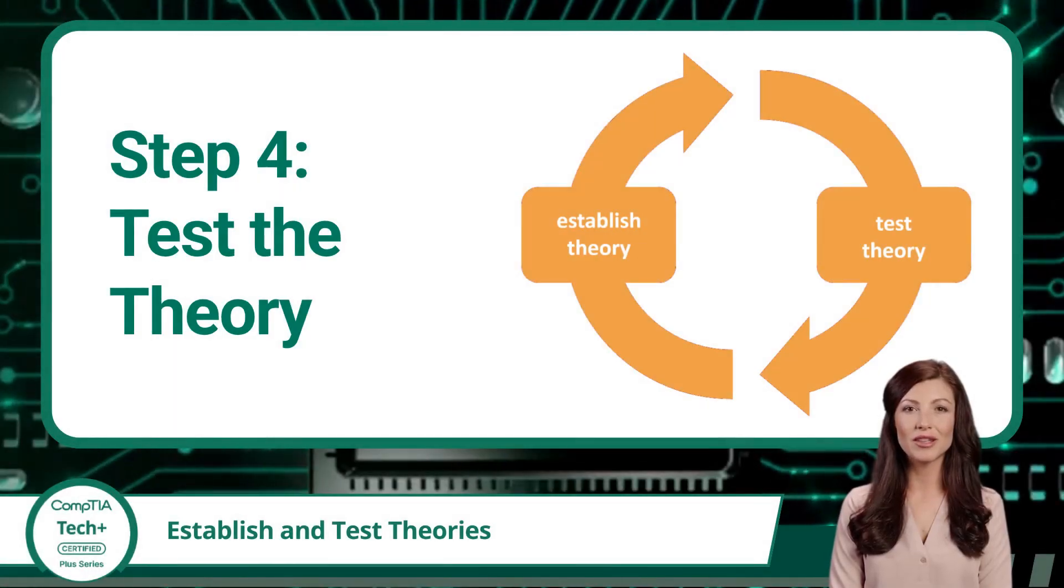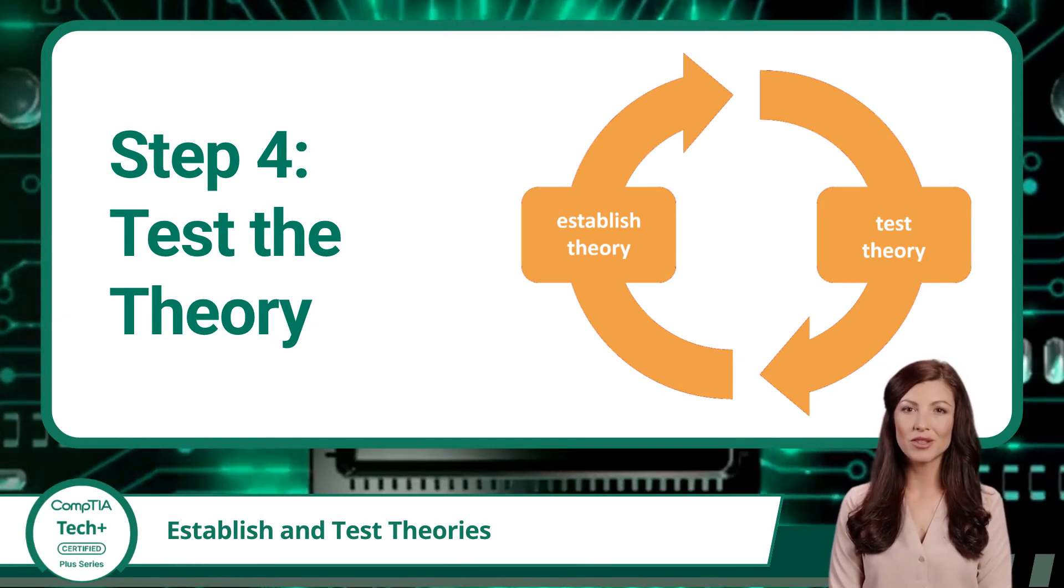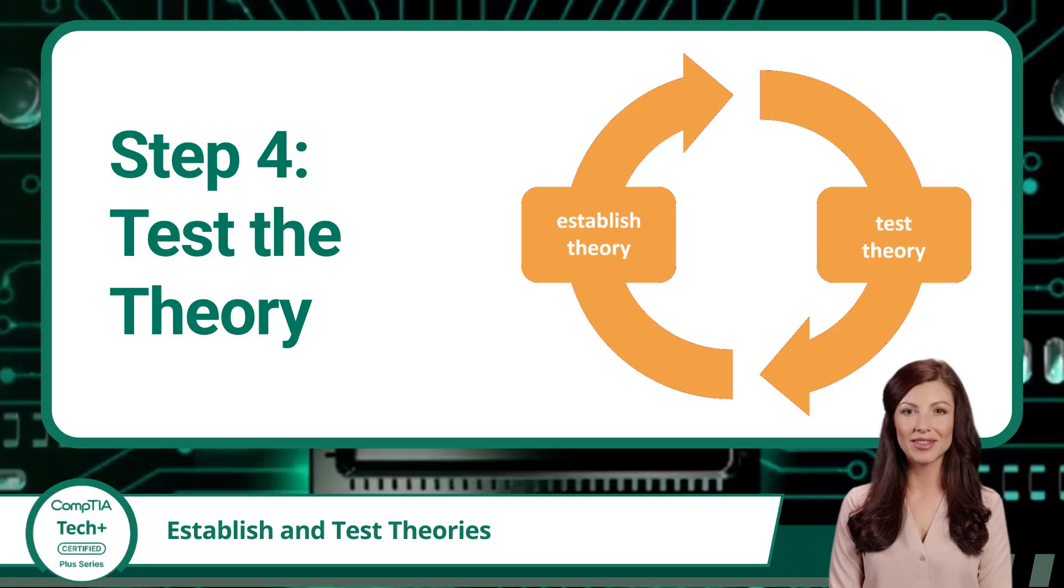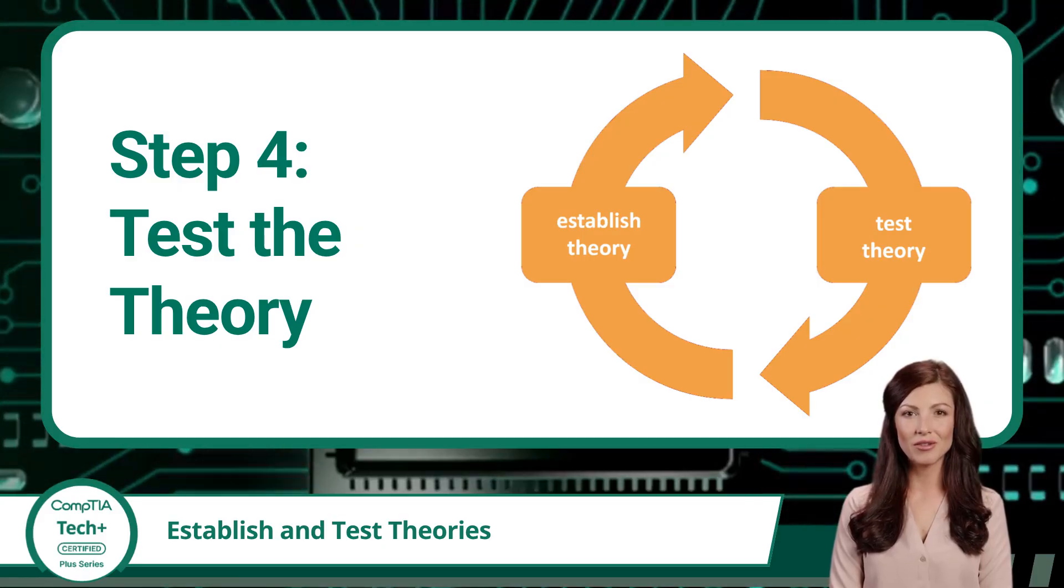Step 4 in CompTIA's troubleshooting process is to test the theory to determine the cause. Coming up with a theory was a great start, but now you need to test it. While testing is the logical step after establishing a theory, we need to remember these two steps are an iterative process and we might need to repeat them a number of times.